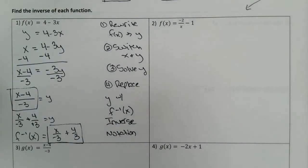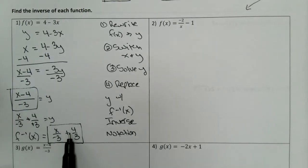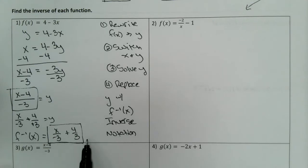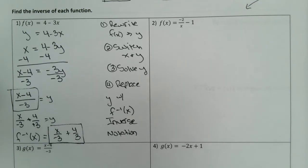So f⁻¹(x) equals x over negative 3 plus 4 thirds. The answer might look like the combined fraction or the split form — you need to be aware that these are exactly the same. If we have to graph the line, the split form is in slope-intercept form, so we might need that version for graphing.